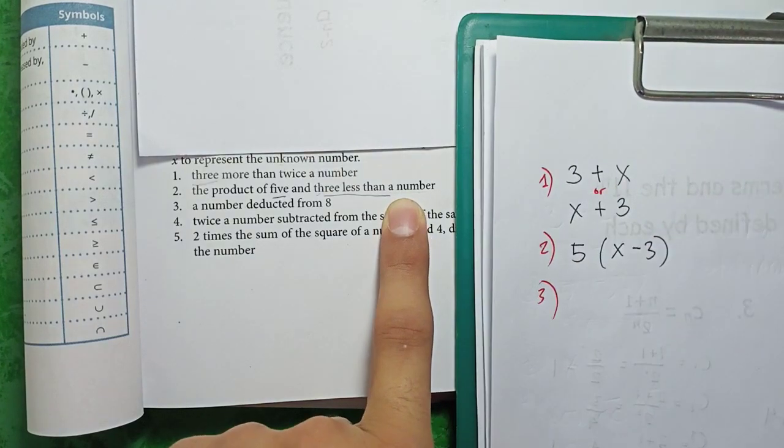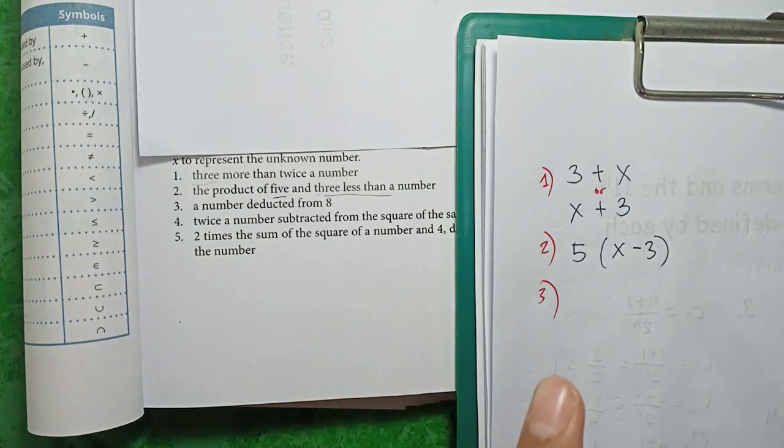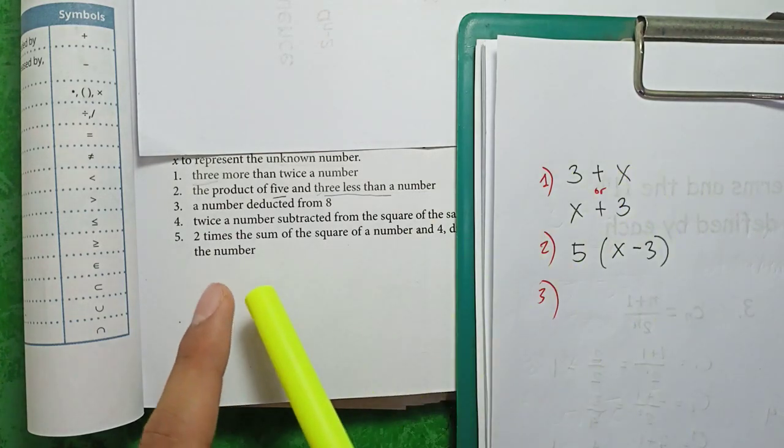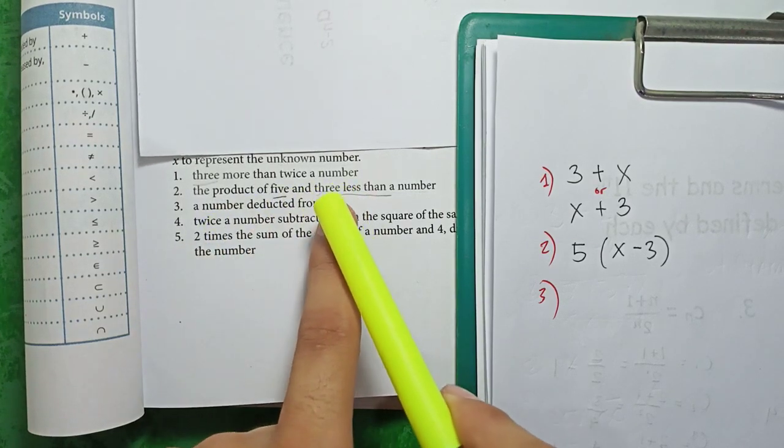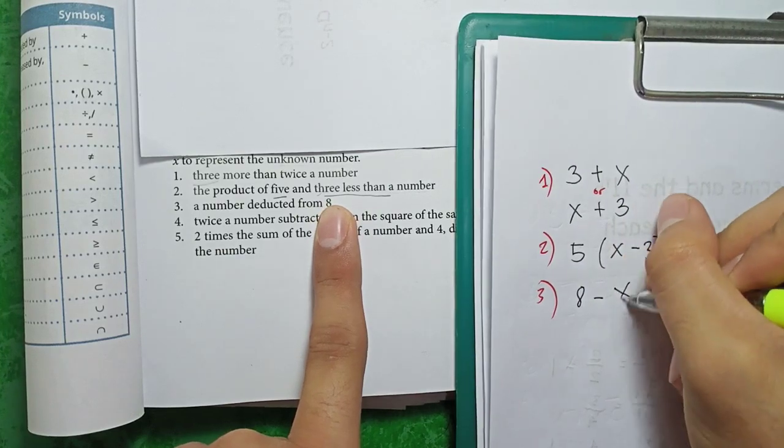Next number, number 3. We have a number deducted from 8. Again, deducted from. Kapag nakita deducted from, subtracted from, less than, reverse. So kung na una si number at nahuli si 8, si 8 muna unahin natin. 8 minus x.